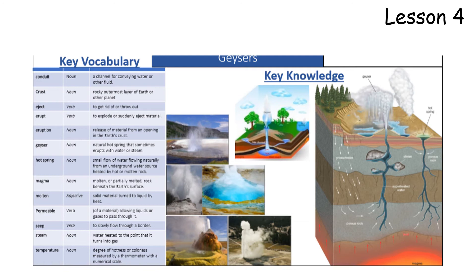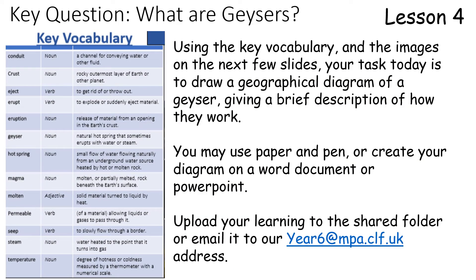Steam is the gas or water vapor given off from water as it's heated. Temperature is the degree of hotness or coldness measured by a thermometer, in either Celsius or Fahrenheit. So using some of this vocabulary, and I've also put some images on the next few slides — what I would like you to do today is to draw me a geographical diagram of a geyser giving a brief description of how they work. Use pen and paper, a Word document, or a PowerPoint — it's up to you — and as always I'd like you to upload your learning to the shared folder.